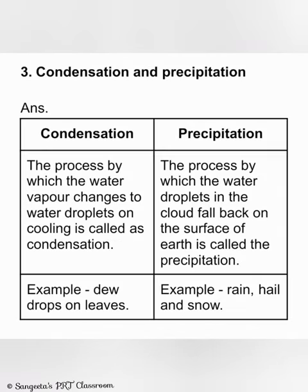Differentiate between condensation and precipitation. Condensation is the process by which water vapour changes to water droplets on cooling; precipitation is the process by which water droplets in the cloud fall back on the surface of earth. Example of condensation: dew drops on leaves. Examples of precipitation: rain, hail and snow.